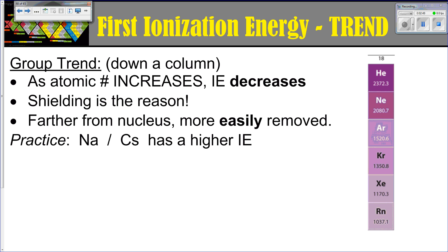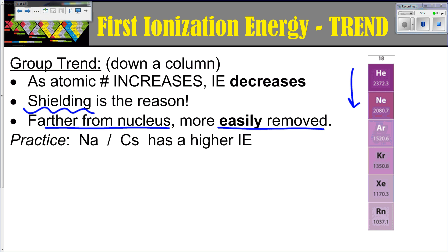As you're looking at a group trend and you're moving down a group, as your atomic number increases down the group, your ionization energy is going to decrease. The main reason for this is shielding. Shielding refers to energy levels between your nucleus and that outermost shell. The more energy levels you add, those valence electrons are further and further away from the nucleus — less attracted to it, more easily removed.